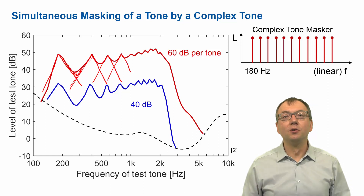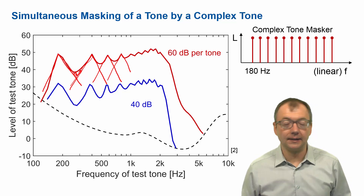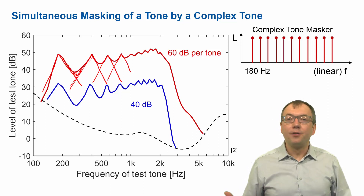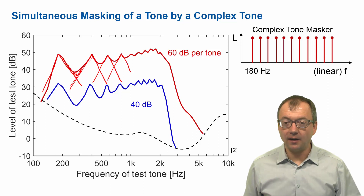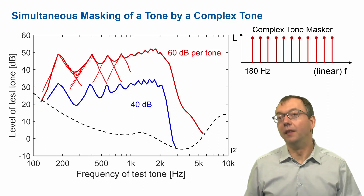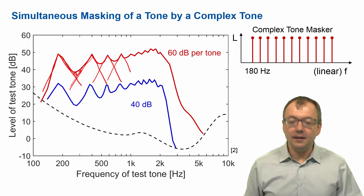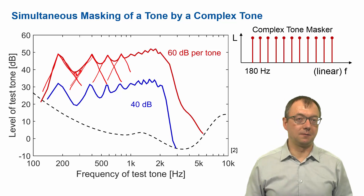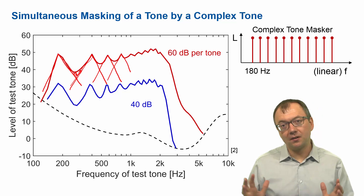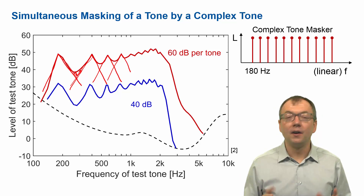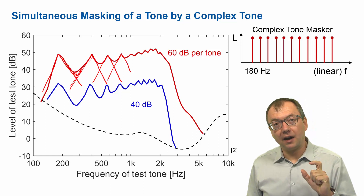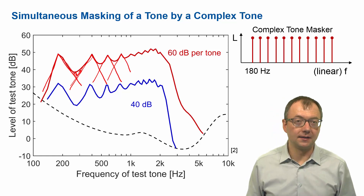This brings us a good step forward towards reality because many natural sounds are made of complex tones — think just about speech, which has harmonic complexes in the vowels. So far we have considered masking only as a simultaneous masking exercise, where stimuli are long enough so that we have steady state conditions. But what happens if our stimuli are shorter, as is often the case in the real world?